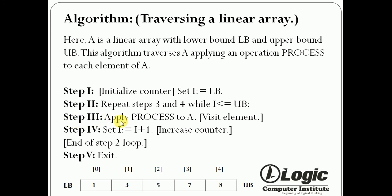Step 3: apply PROCESS, meaning visiting process to element of array A. In step 4, increment the counter. So i equals i plus 1, and this is the end of loop.